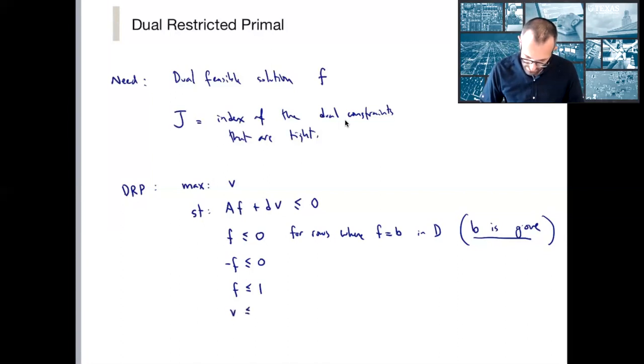Yeah, I'm sorry. I misspoke. There was no B there. This is the part where I used to have a B here. So now B is gone. I'm sorry. AF plus DV less than zero is what we had in the original dual. And my point is that because all of those constraints are tight, they are all going to appear exactly in the same way in the dual restricted problem.